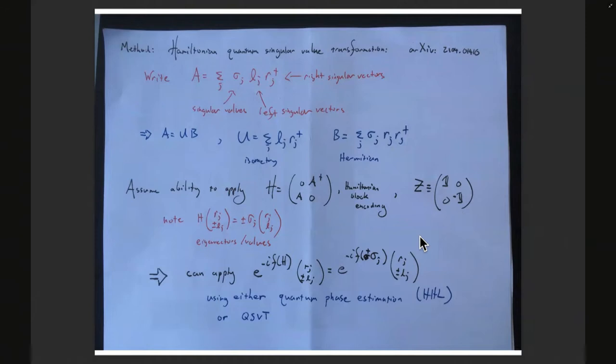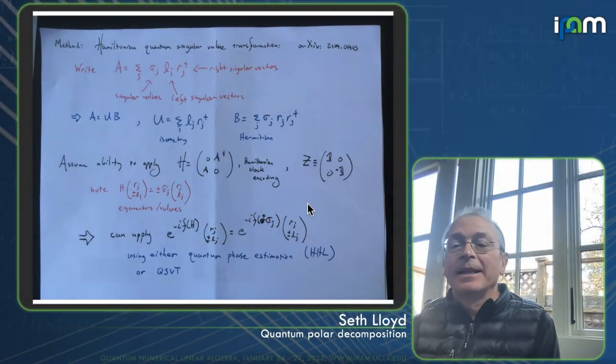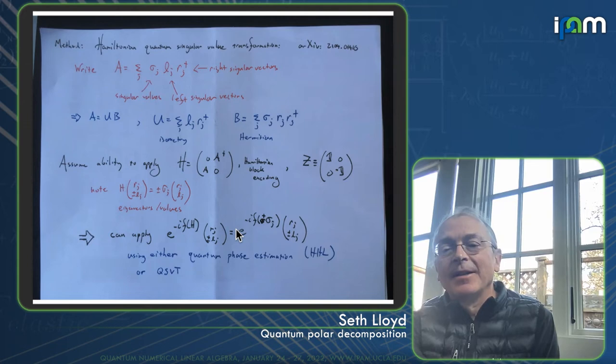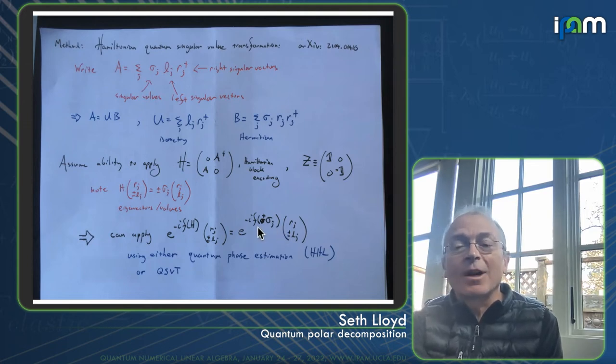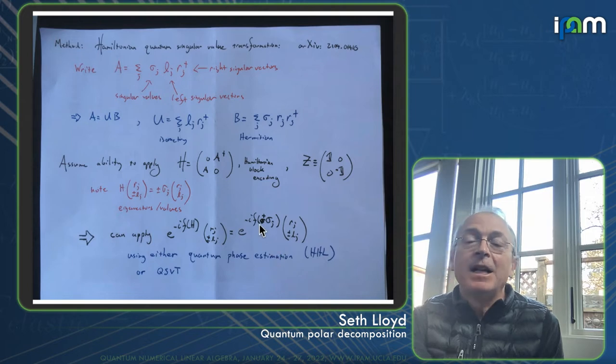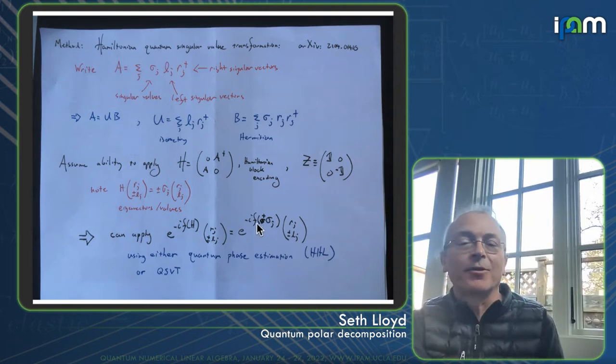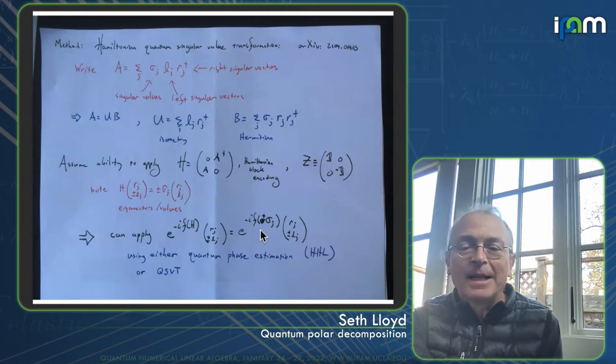And the original method for doing this was in our paper with Avinathan and Aram for matrix inversion, in which we pointed out that if you use quantum phase estimation in parallel, essentially to estimate these eigenvalues, then you can construct this quantum singular value transform using this quantum phase estimation. When F of X is one over X, then you get inversion, but in the paper we noted we could get any F that you wanted.